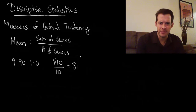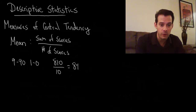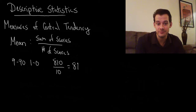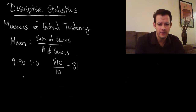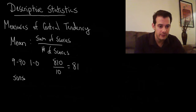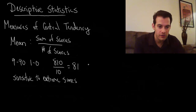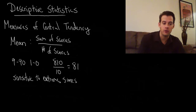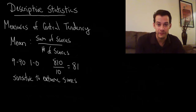If I tell the students the average score was 81, then I have nine students who think they did better than the average, when in fact each of them only did better than one other student. So the problem with the mean is that it's sensitive to extreme scores — when we have a very high or very low score, the mean is going to be affected very strongly.